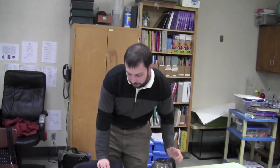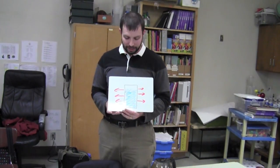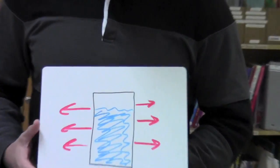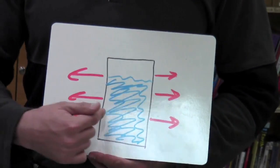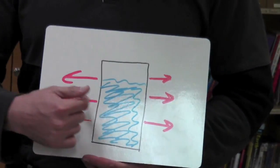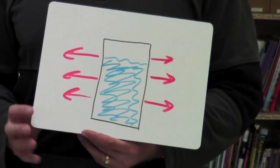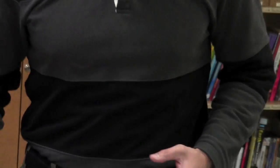Heat energy wants to spread out. In this diagram, I've demonstrated a cup of hot water. The heat energy is represented by the red arrows — it wants to flow out in all directions.